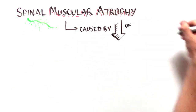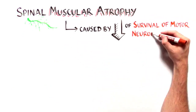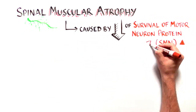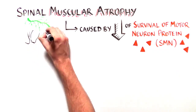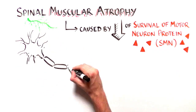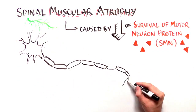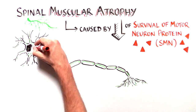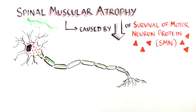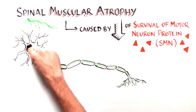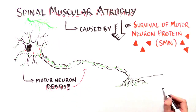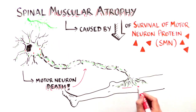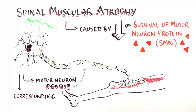SMA is caused by too little of a vital protein called survival of motor neuron, or SMN, in the spinal cord's motor neurons. Too little of this protein causes the motor neurons to die and the muscles they control to waste away.